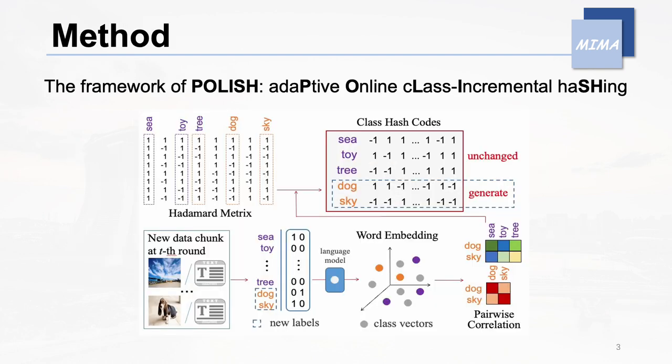To address the aforementioned challenges, we introduce a novel supervised cross-modal online hashing method in this paper, named Adaptive Online Class Incremental Hashing, POLISH. As shown in the figure, POLISH leverages category correlation and semantic information obtained by language models to generate representations for new class labels.